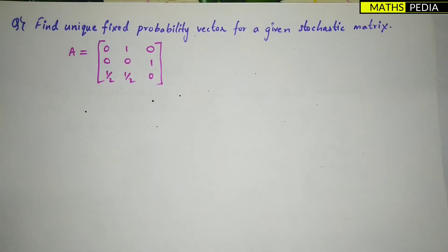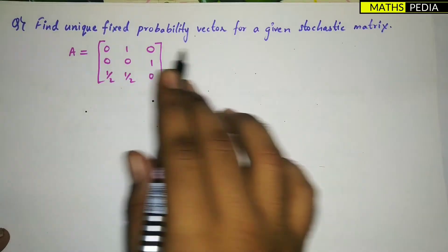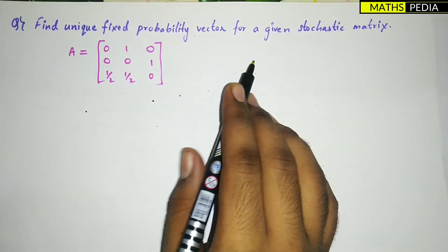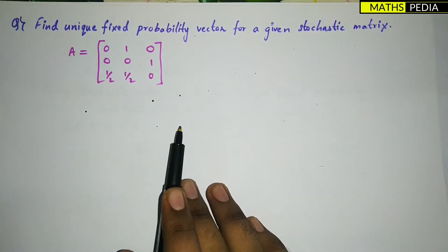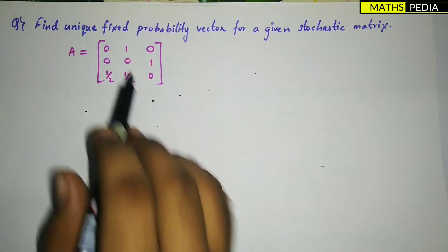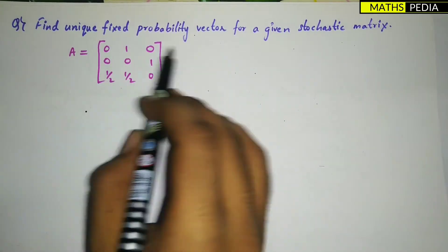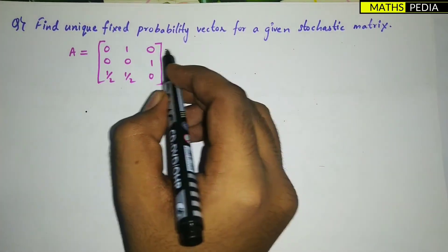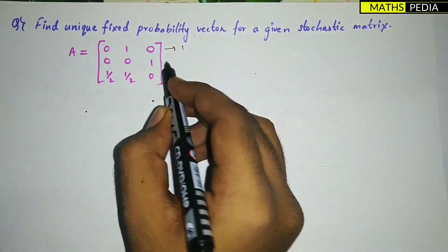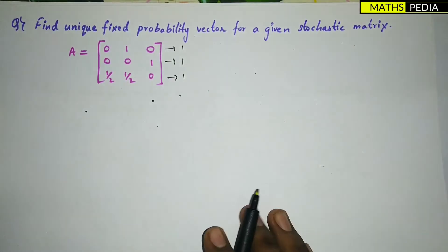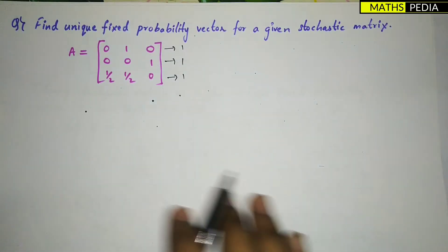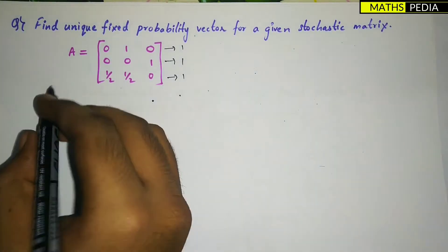In this video we are going to solve one problem based on unique fixed probability vector. It is given that this is a stochastic matrix, where when you add the rows you will get one — that's basically a stochastic matrix.